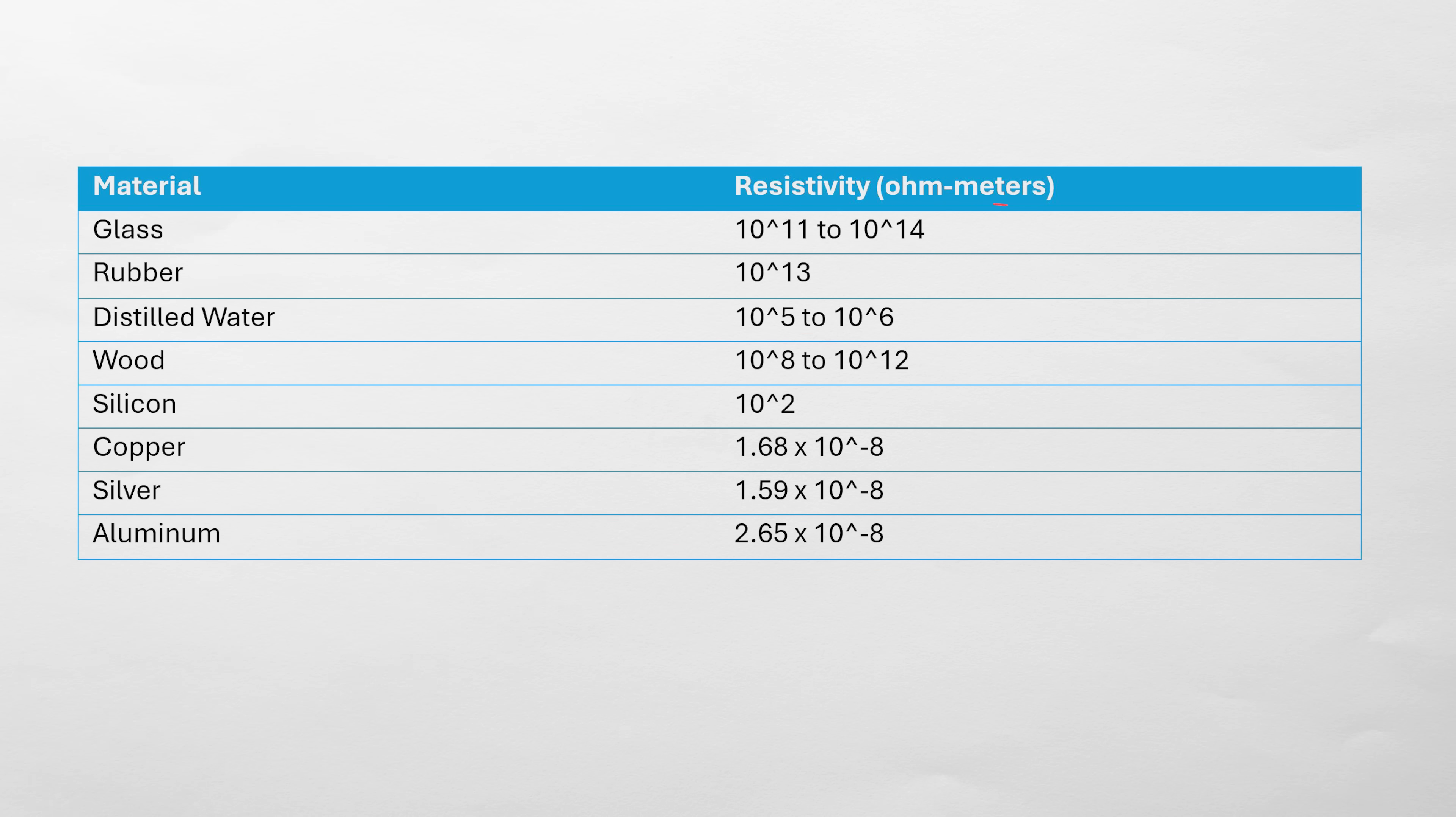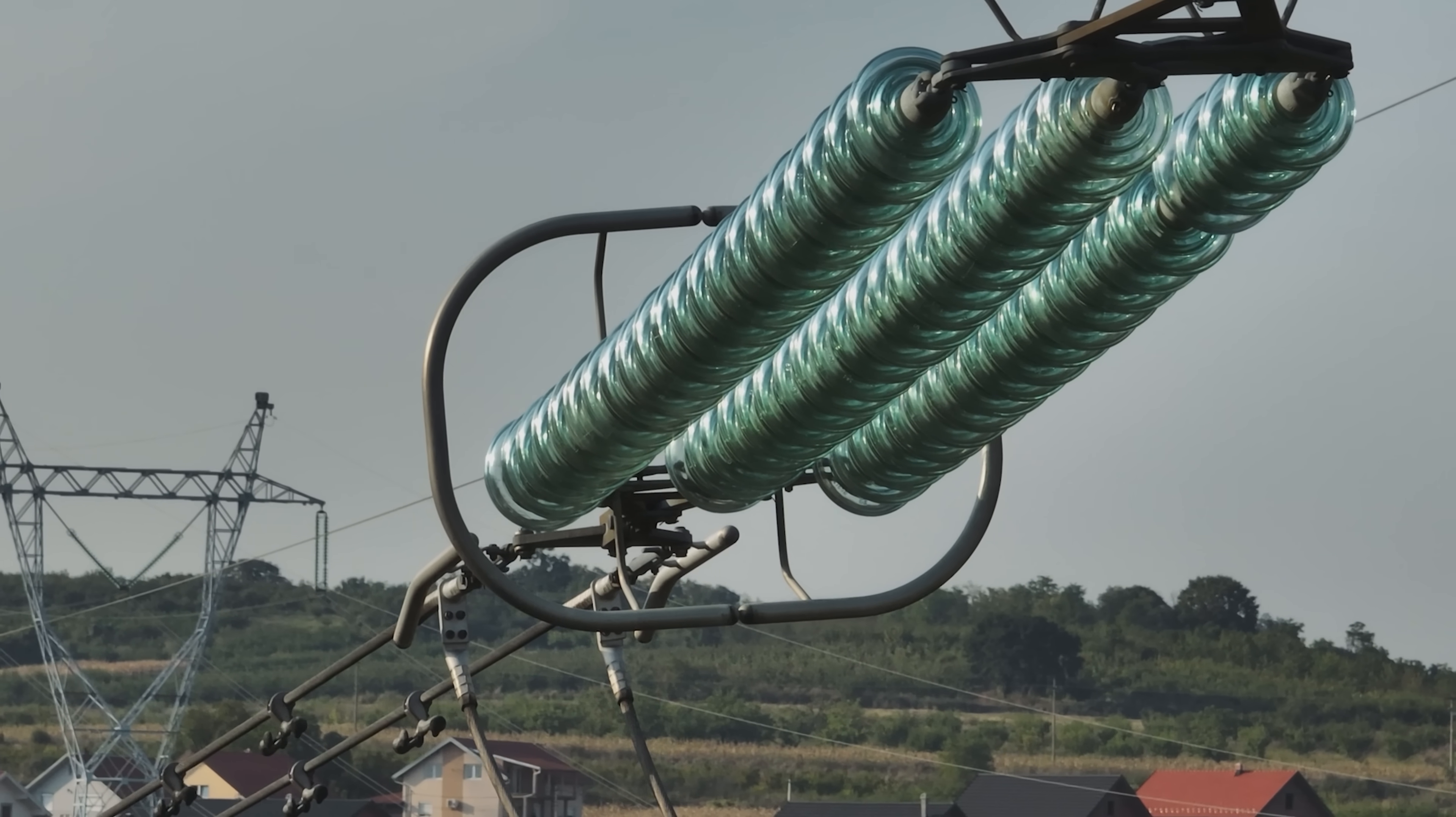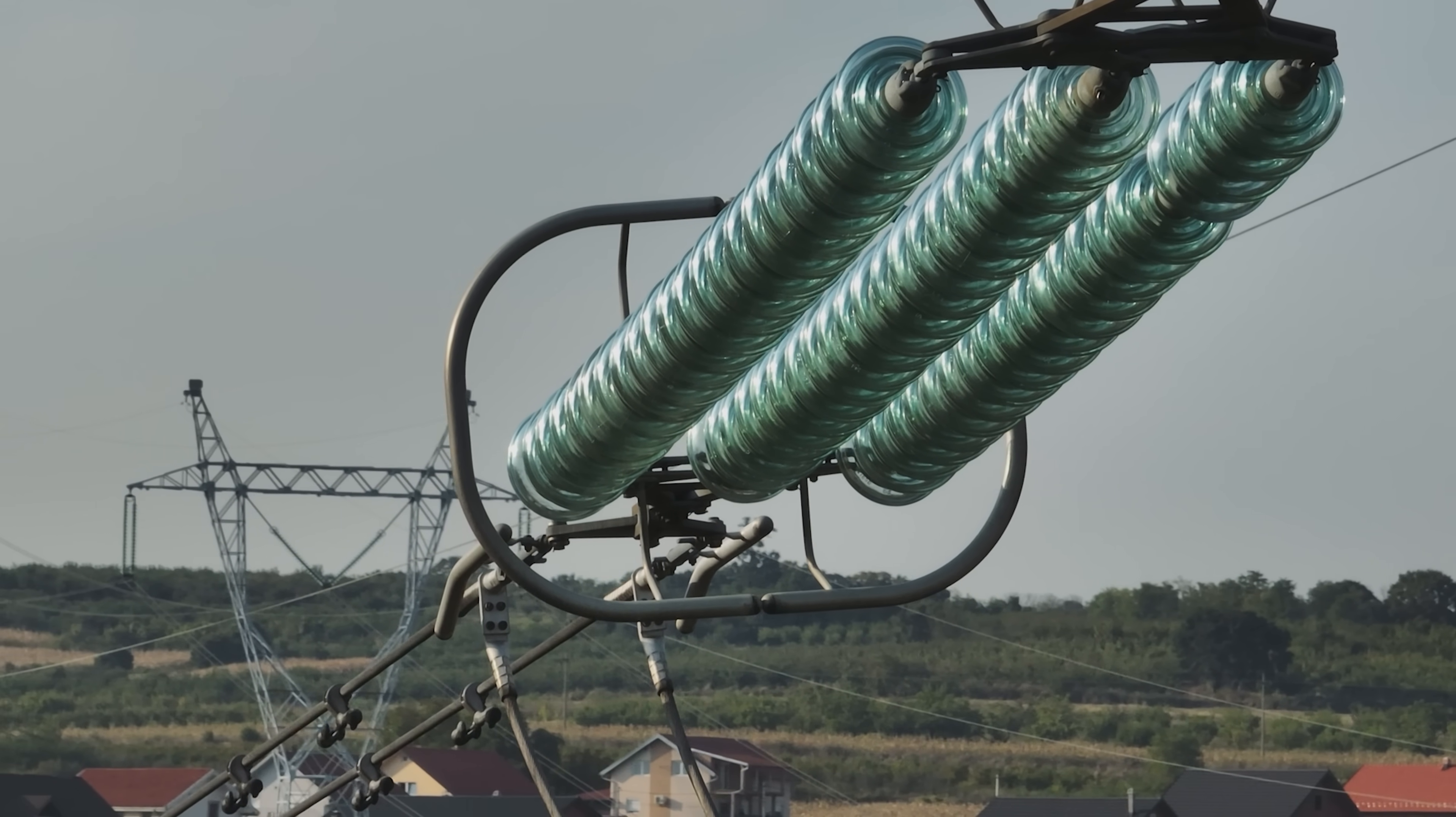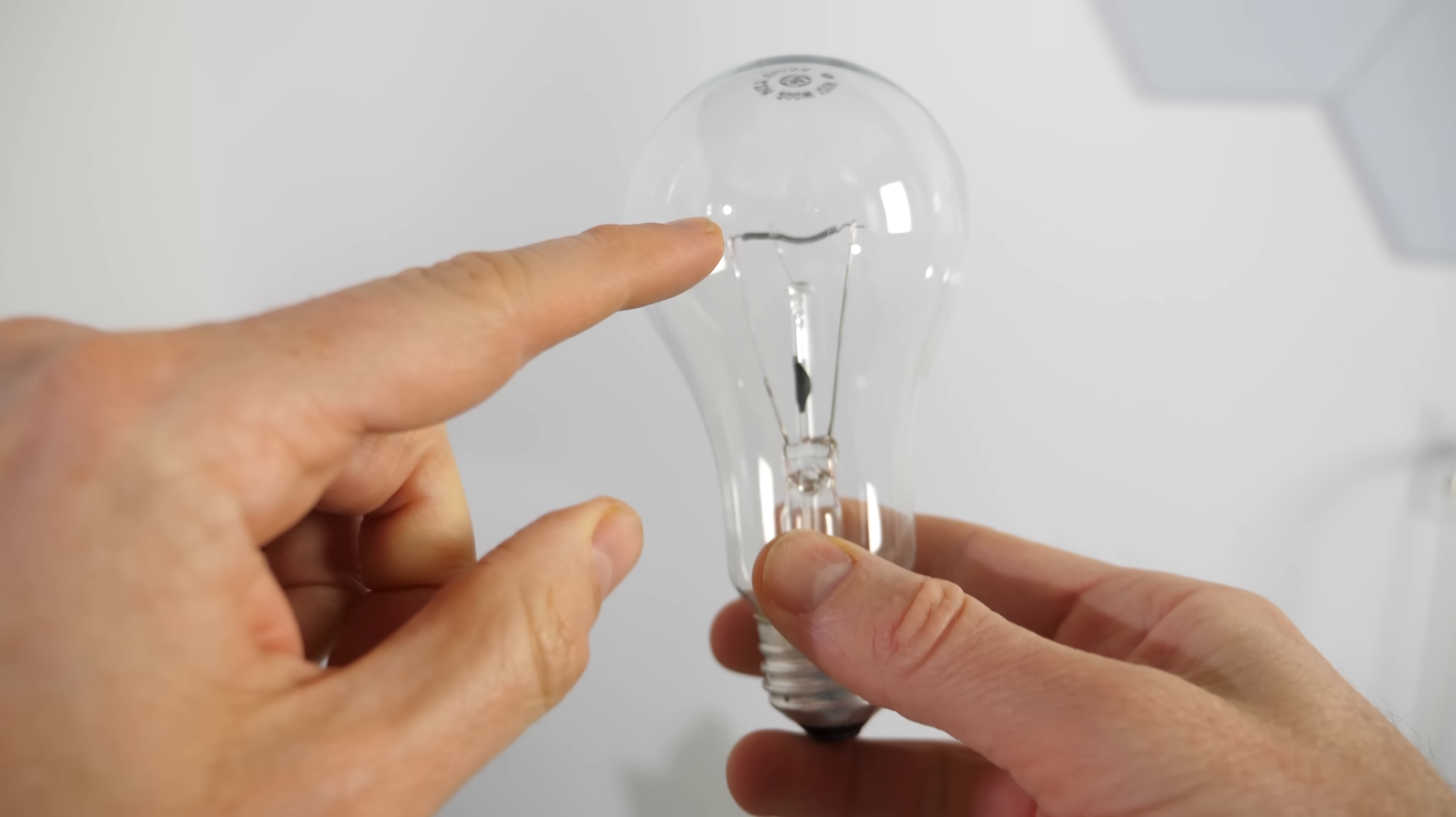The resistivity of glass is typically really high, often in the range of tens of billions to even hundreds of trillions of ohm-meters. That's why glass is used in high voltage insulators for power transmission lines, and you can see in these 200-watt incandescent bulbs that the glass is what separates the wires going up into the bulb.